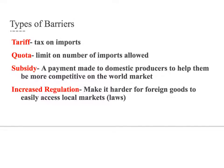A quota limits the number of imports that are allowed. A government could decide to subsidize domestic producers to help them be more competitive on the world market, thus lowering the price of doing business for the domestic producer and making it more competitive compared to lower-priced items overseas. Increased regulation also makes it harder for foreign goods to easily access local markets by creating laws regulating various aspects of the good.